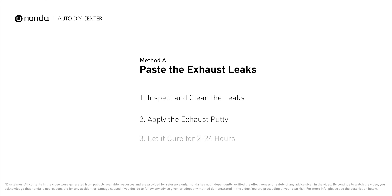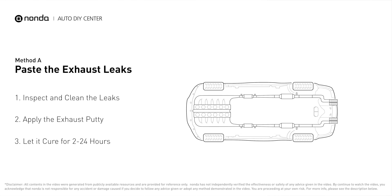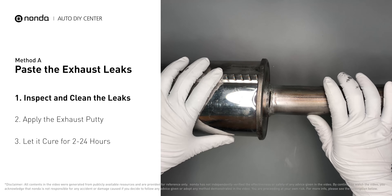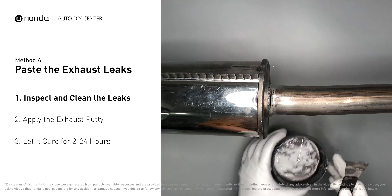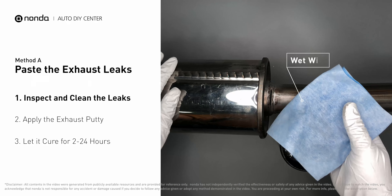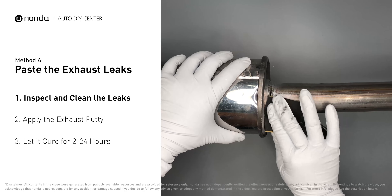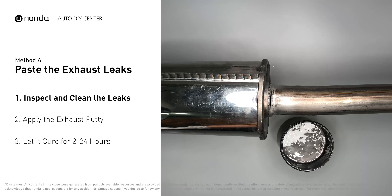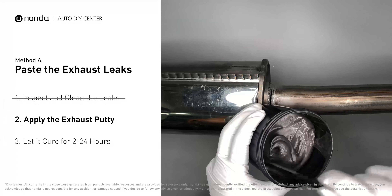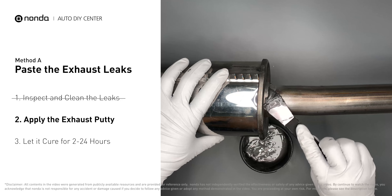Method A: Paste the exhaust leaks. The exhaust system begins at the engine combustion chambers and runs along the undercarriage of the vehicle, eventually ending with a visible tailpipe. If you have a leak, get some exhaust putty to seal it up. First, get sandpaper and a wet wipe to clean the leaking area for better application. Stir the paste well to activate it, then apply and press the paste to seal the leaking area.